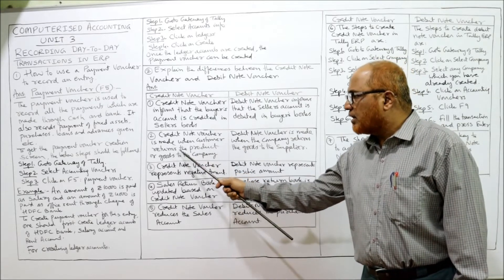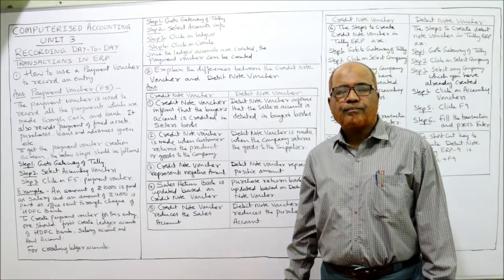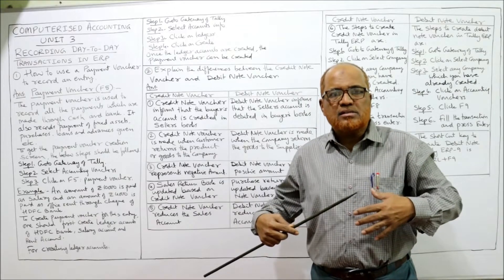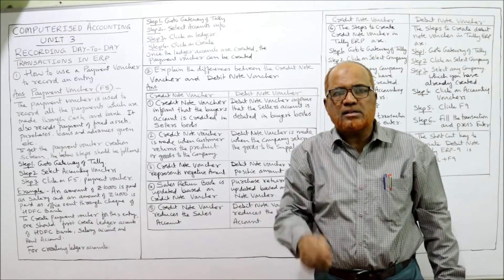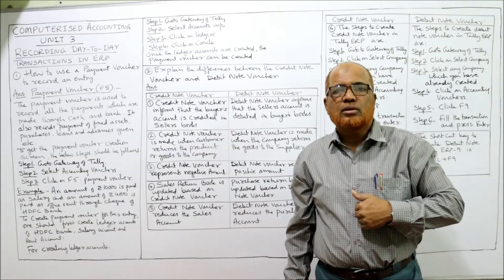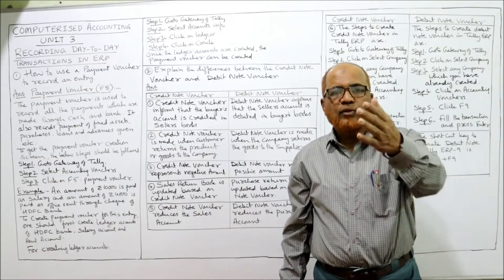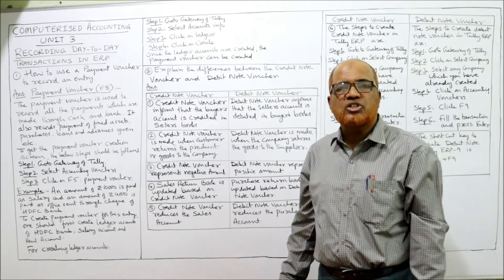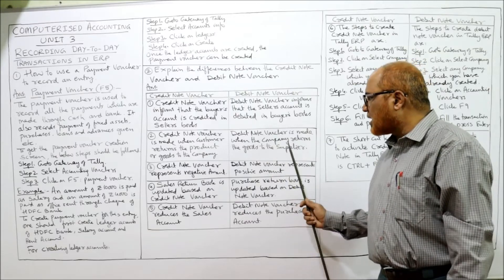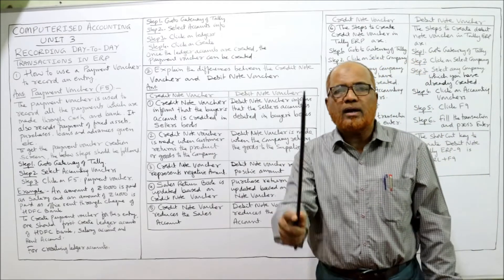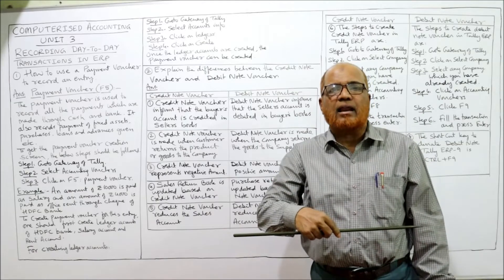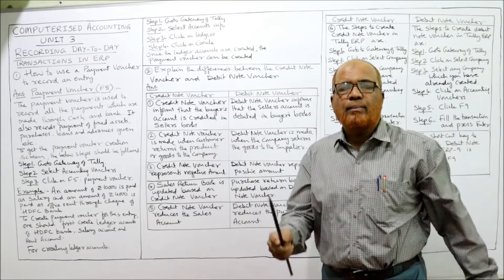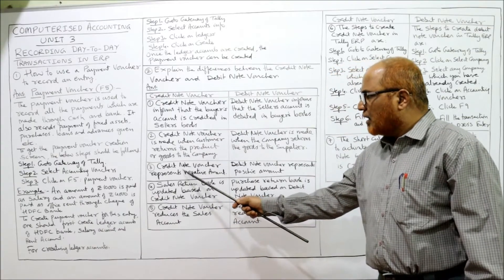The credit note voucher is made when the customer returns goods to the company — this is called sales return. The debit note voucher is made when the company (as buyer) returns goods to the supplier — this is called purchase return. The seller makes a credit note voucher; the buyer makes a debit note voucher.